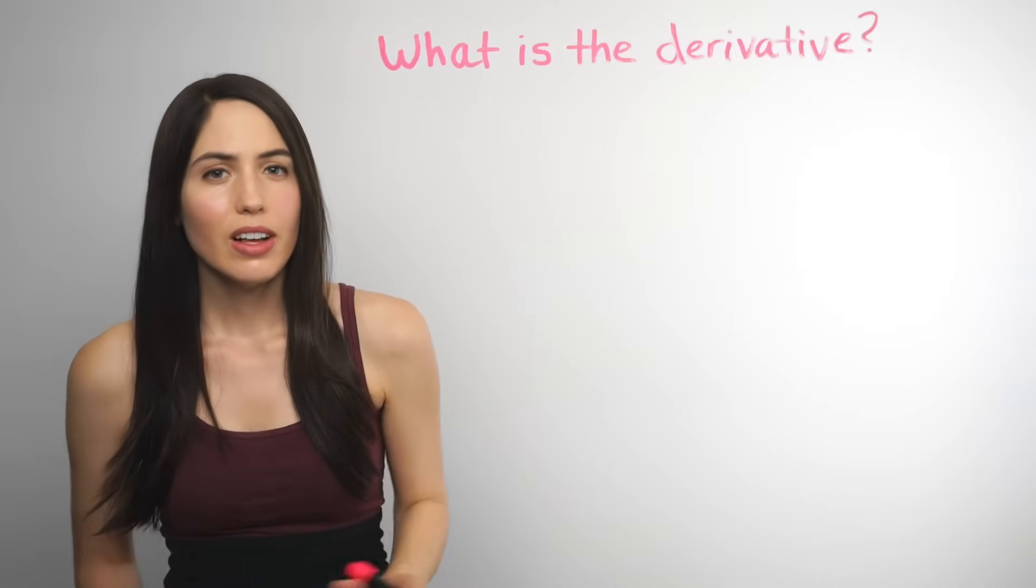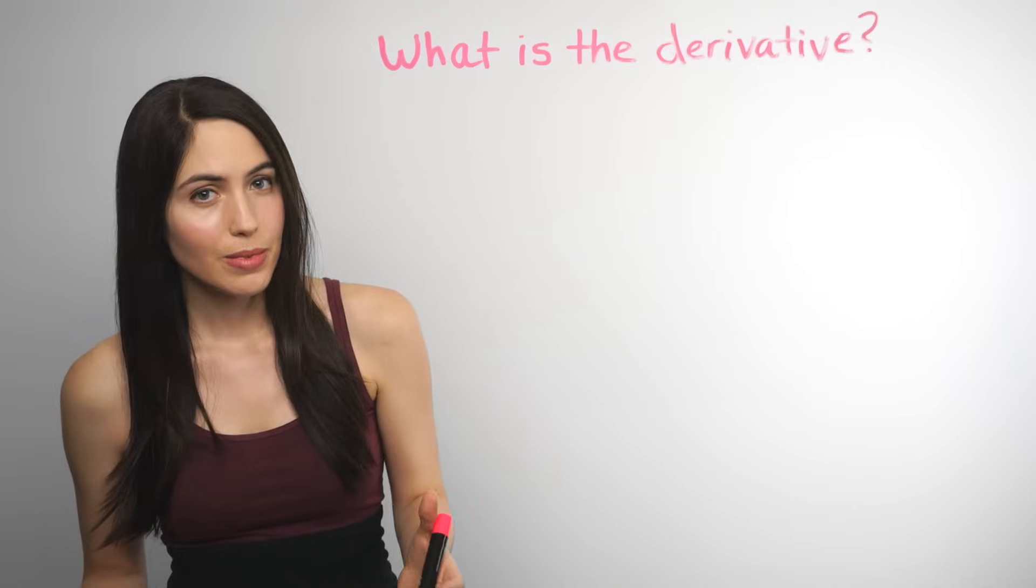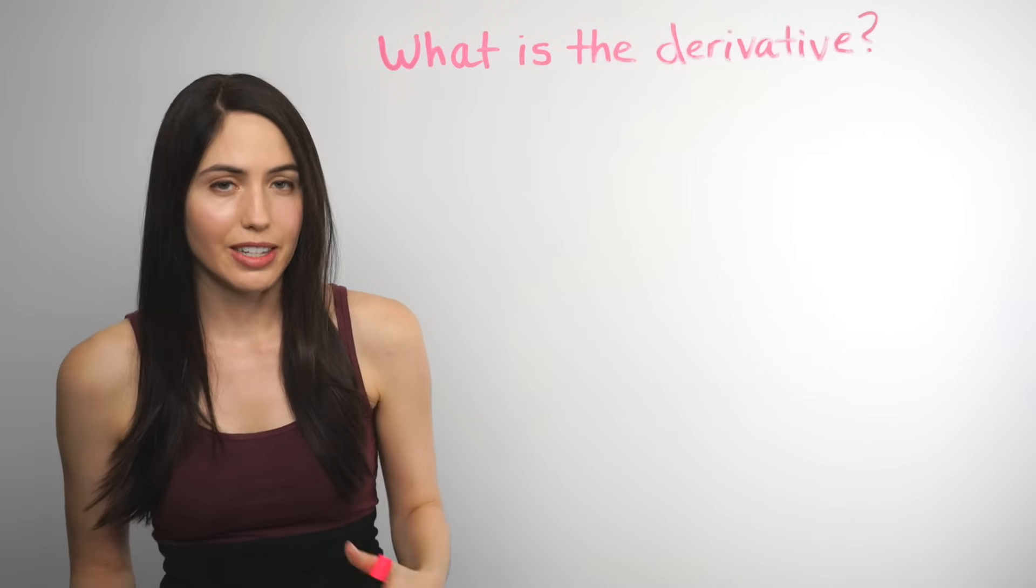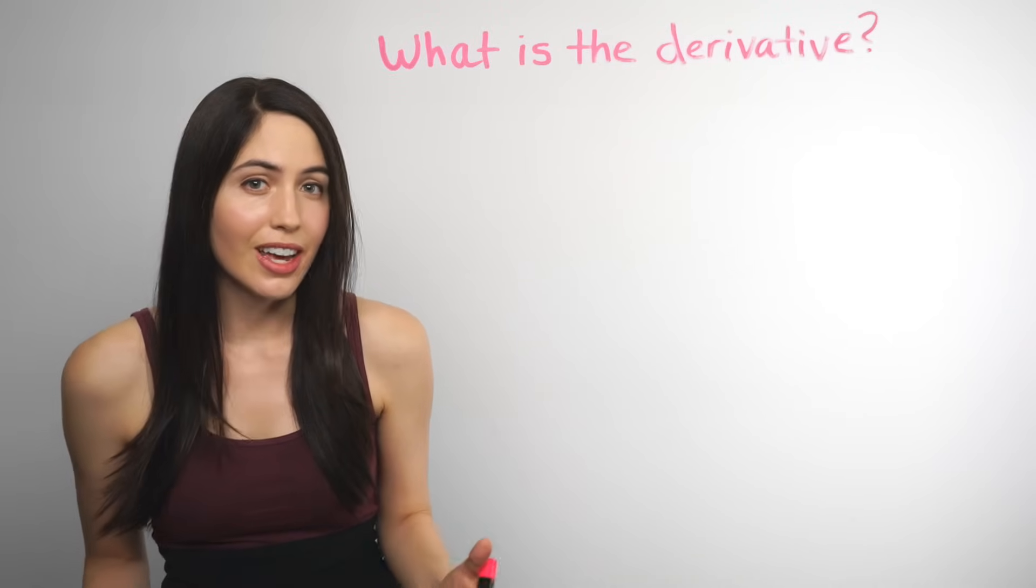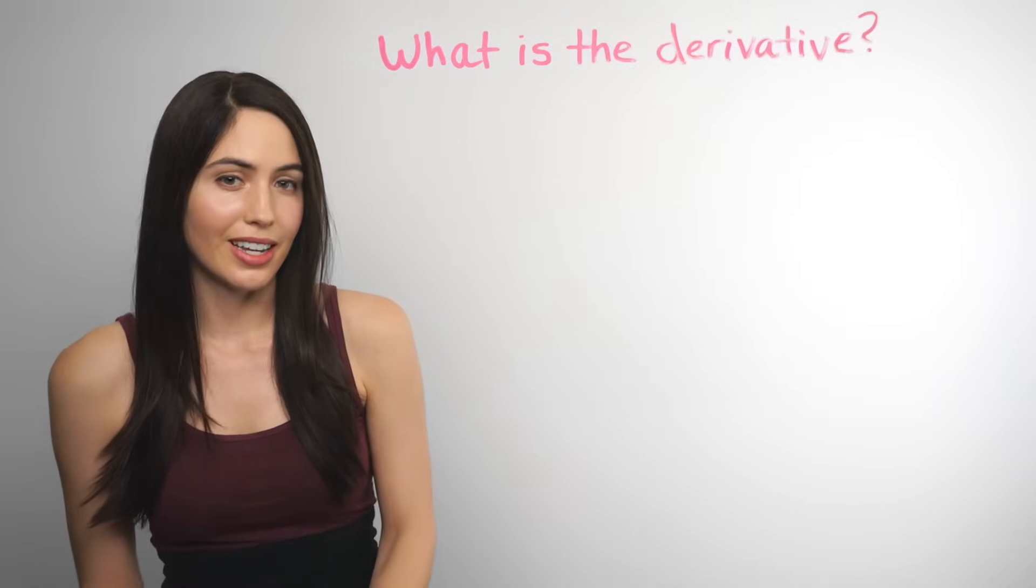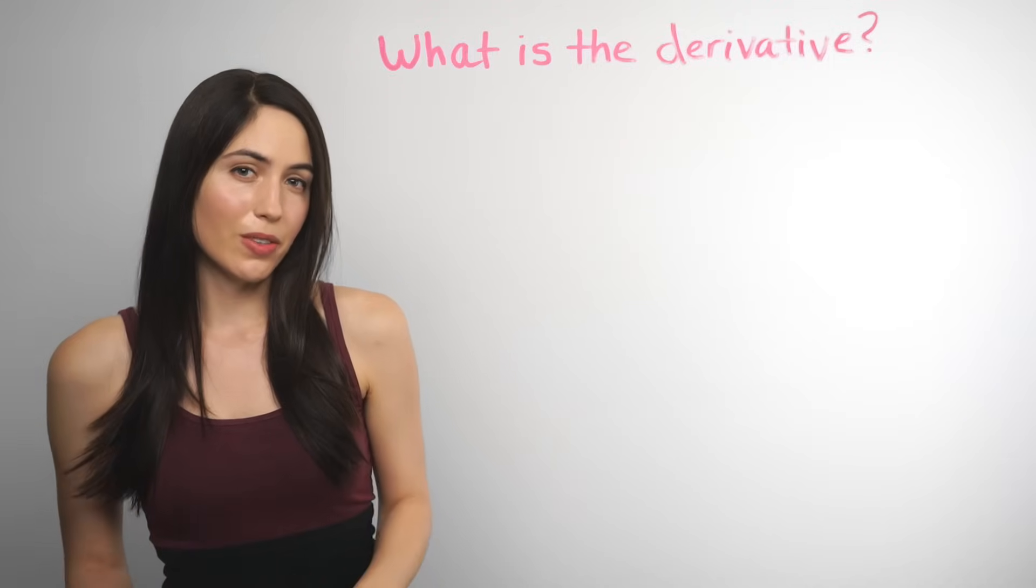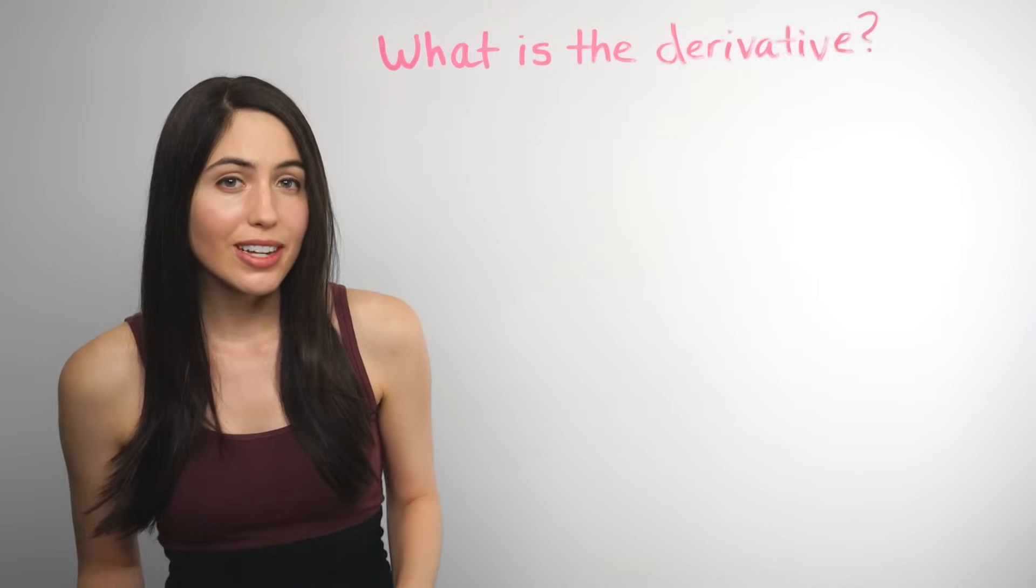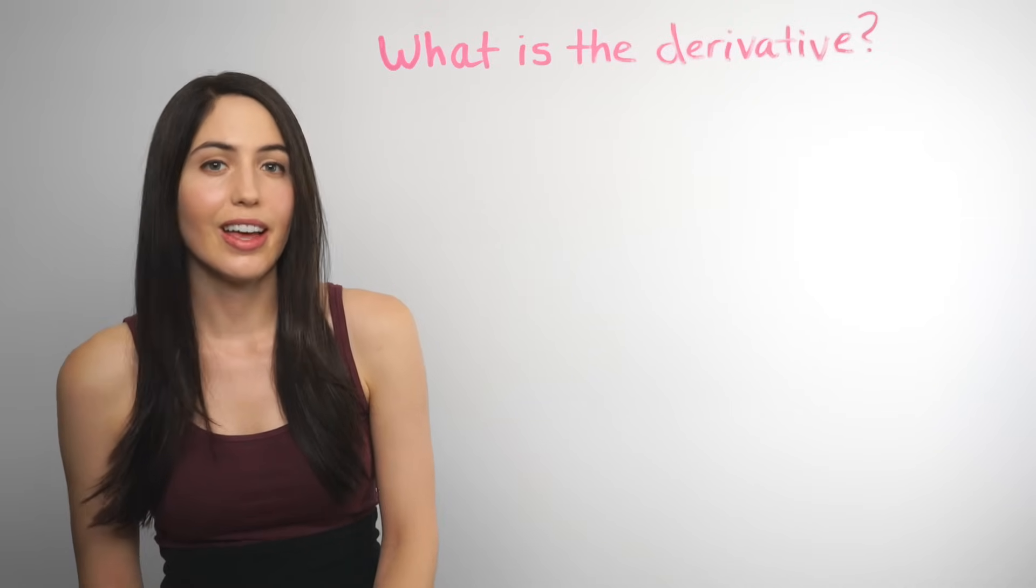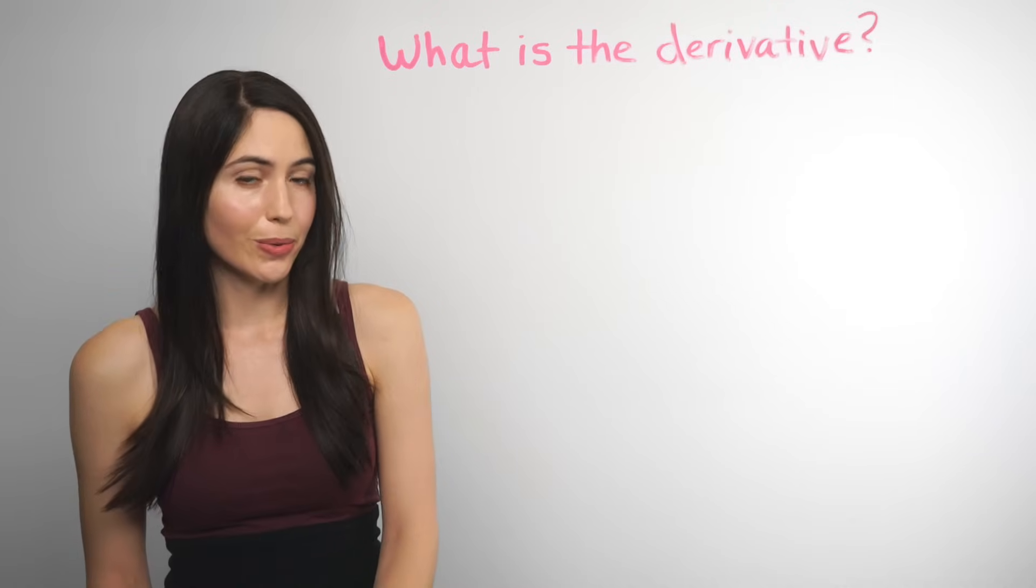So what is the derivative? Long story short, it's a function that tells you the slope of the line tangent to the curve at any point. It gives you the rate of change at any instant, the instantaneous rate of change at any point. And we're going to figure out the proper definition of the derivative with the limits, but if you just can't wait to use it to calculate the derivative, you can skip ahead and jump to the time in the description. Or you can go down this rabbit hole with us.